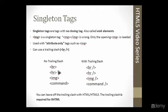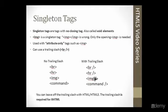Here we have some examples of tags without a trailing slash — the line break, the horizontal line, and the image. And this is what they would look like with the trailing slash. Once again, if you're using XHTML, which is not covered in this tutorial, this is how you would do it.